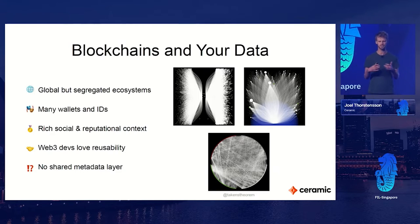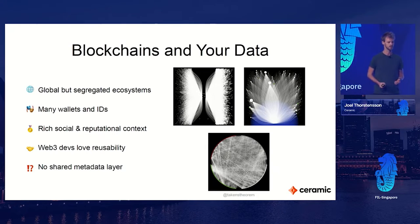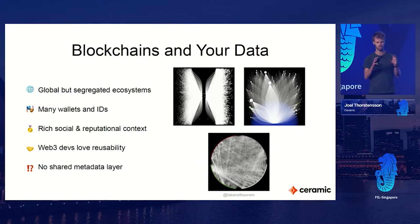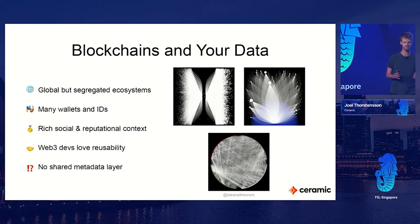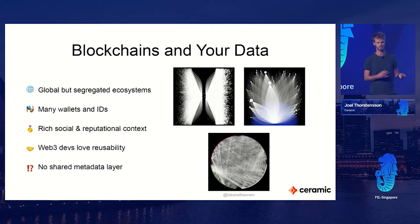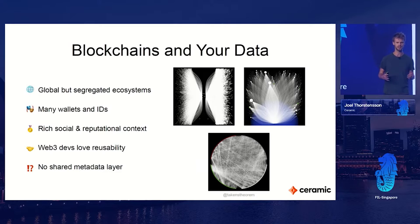We have started getting some bridges between different blockchains for sending tokens, but data is still very segregated. Within these ecosystems - like within Filecoin, within Ethereum - there's rich social and reputational context within these graphs of interactions. But they're still locked in. Web3 developers generally like composability. It would be great if I could take my Ethereum profile when I come to an app in the Filecoin ecosystem and just carry my data around. But we don't really have that shared metadata layer for the entire Web3 space as it currently stands.